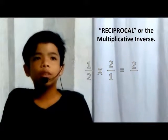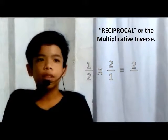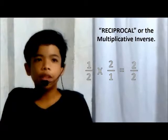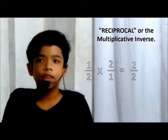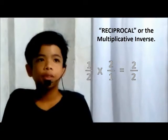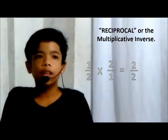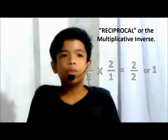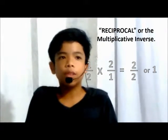Multiply the two denominators: 2 times 1 equals 2, and this will be the denominator of our answer. Then we simplify it and our final answer is 1. So, 1 half divided by 1 half is equal to 1.